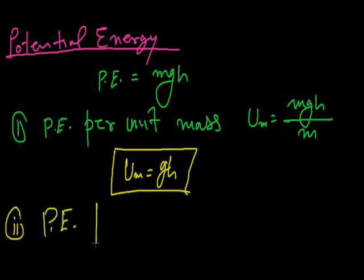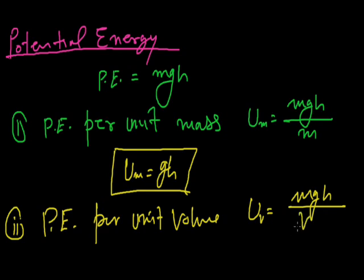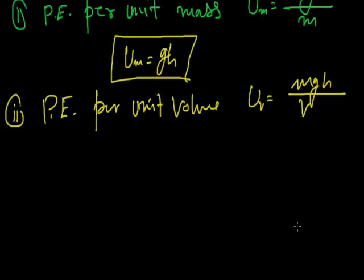Potential energy per unit volume, Uv, is equal to mgh upon volume, and mass upon volume is density. So Uv is equal to rho gh.